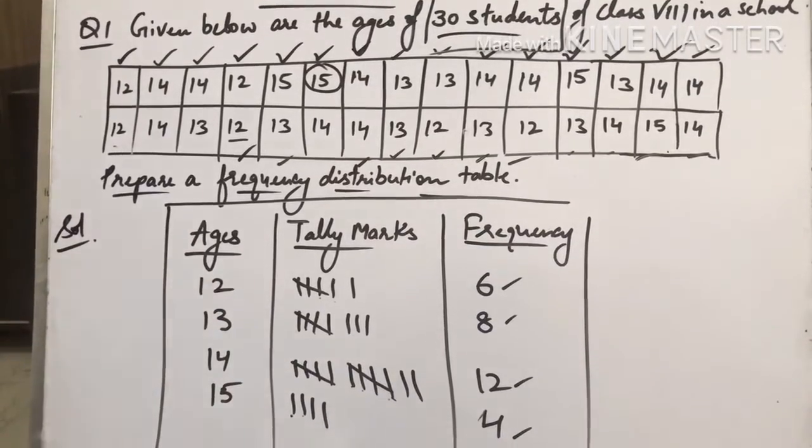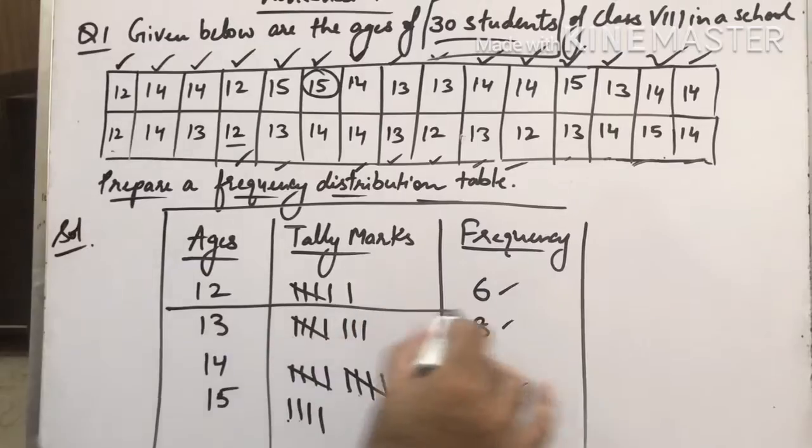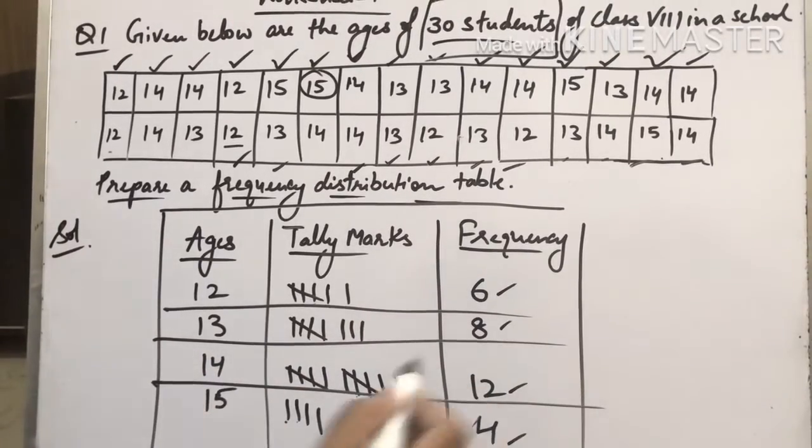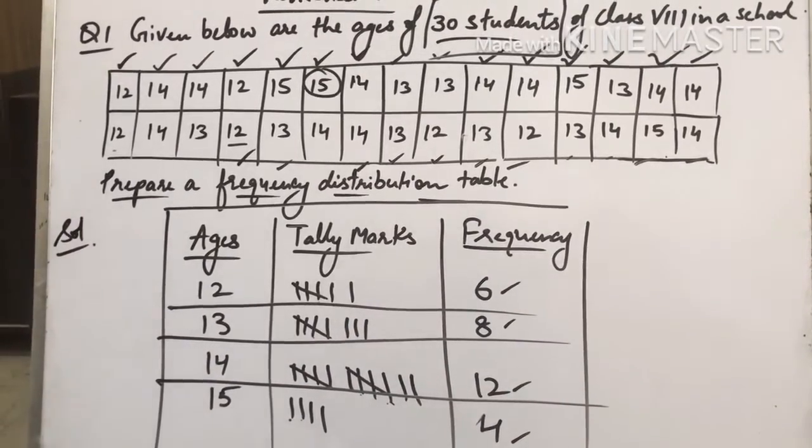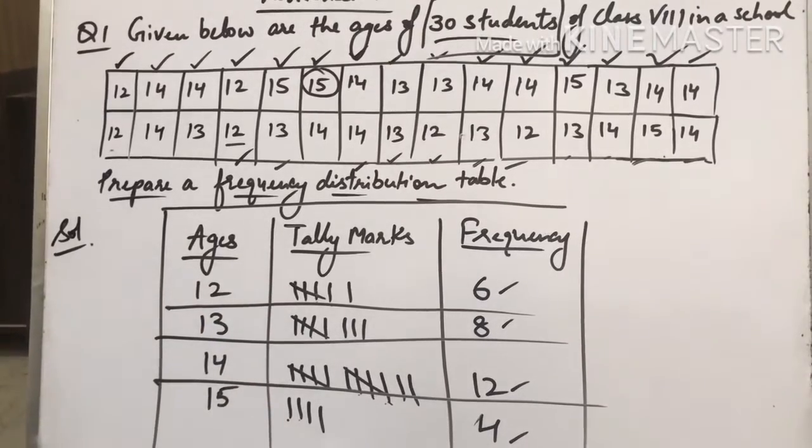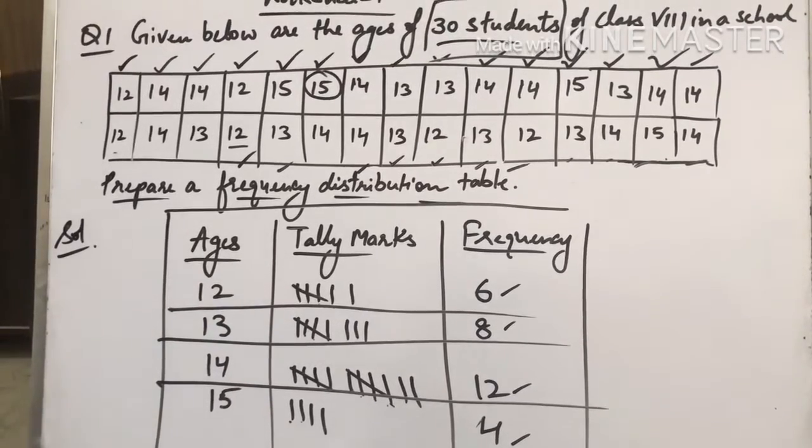I made one column for ages, then I made tally marks, then counted the tally marks for frequency. So this whole table is known as a frequency distribution table.